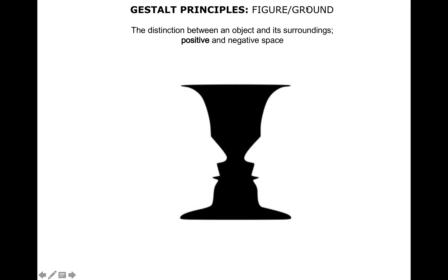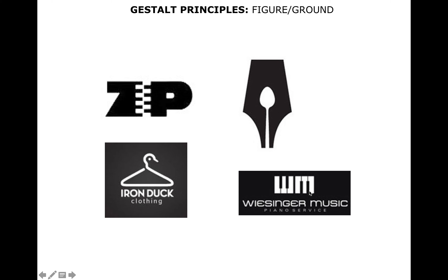Figure-ground relationships are similar to closure in some degree, but it's more based around the distinction between an object and its surrounding, and deciphering what exactly is positive space versus what is negative space. You might look at this and see a vase, but some people might see two silhouettes of faces looking at each other. Figure-ground relationships can be very dynamic and ambiguous at the same time. A lot of times you'll see this principle used in logos and branding as well, and it usually defines something related to what the images are portraying.